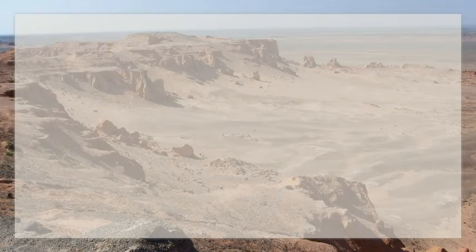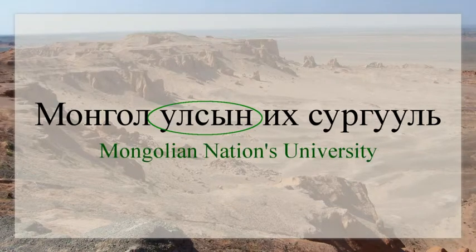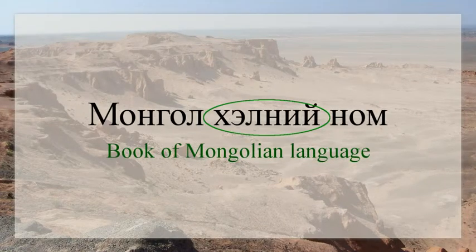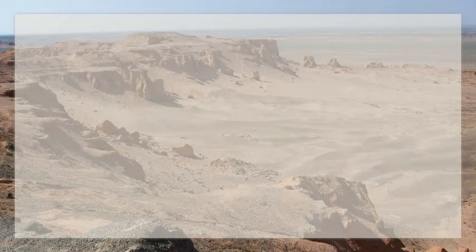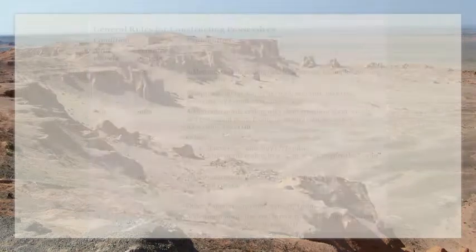A final aspect of possessives that is important to be aware of is that oftentimes the possessive form functions the same way 'of' is used in English. For example, 'Mongold osing i sorgol' means 'National University of Mongolia' — literally 'Mongolian Nations University.' And 'Mongold hithni nom' means 'Book of Mongolian Language' — literally 'Mongolian Languages Book.' Other examples abound and are not hard to find in everyday speech and writing. As such, mastering the rules for recognizing and eventually creating possessives is a critical skill.